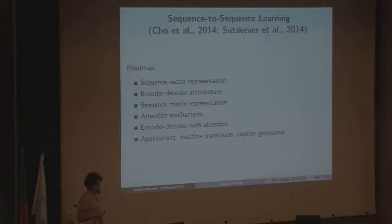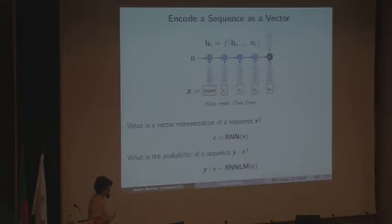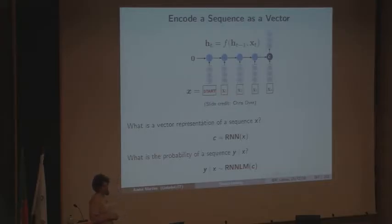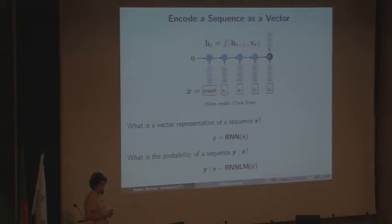Now let's talk about sequence-to-sequence models, which got very popular in the last couple of years. There were key papers from the Montreal group and the Brain team at Google. The fundamental idea is to learn a function that maps sequences to sequences. Problems this applies to include machine translation, caption generation for images, and speech-to-text. It's somewhat surprising that you can do almost all of these with the same kind of model without heavy feature engineering.